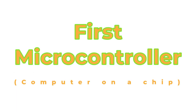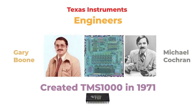The earliest known microcontroller was developed in 1971 by Texas Instruments engineers Gary Boone and Michael Cochran. The result of their work was the TMS 1000, which became commercially available in 1974.